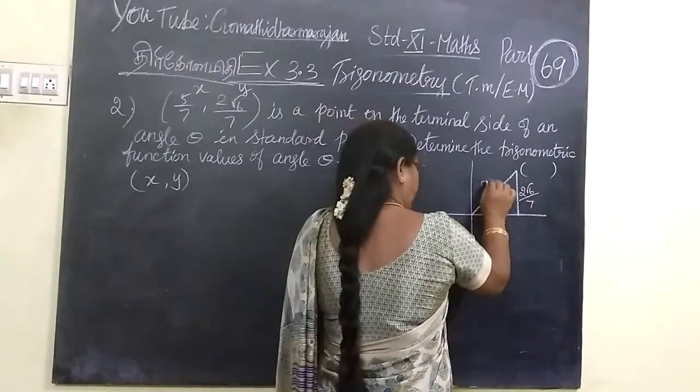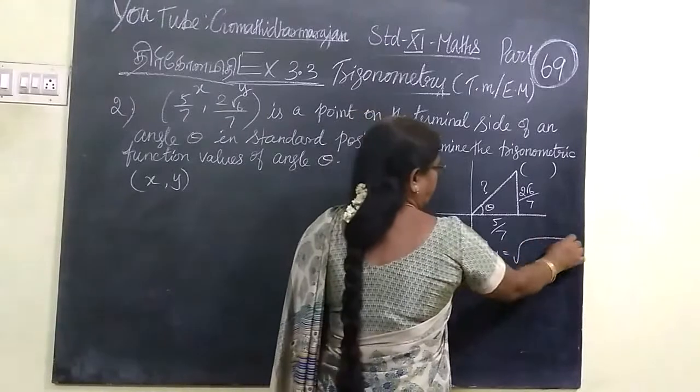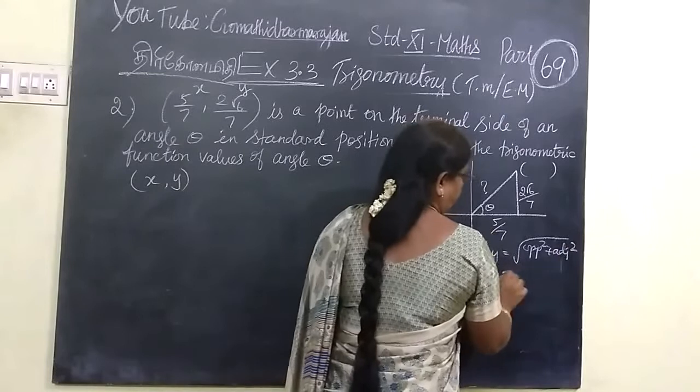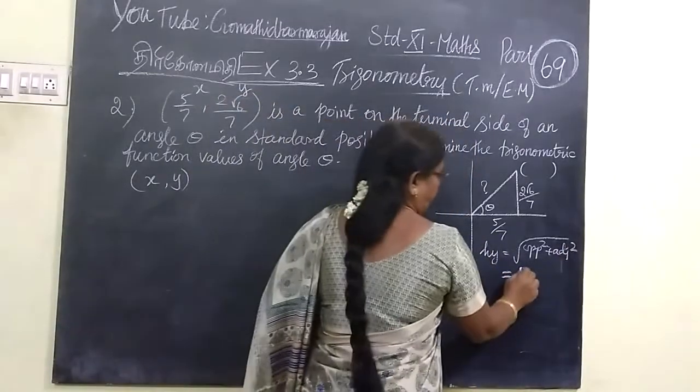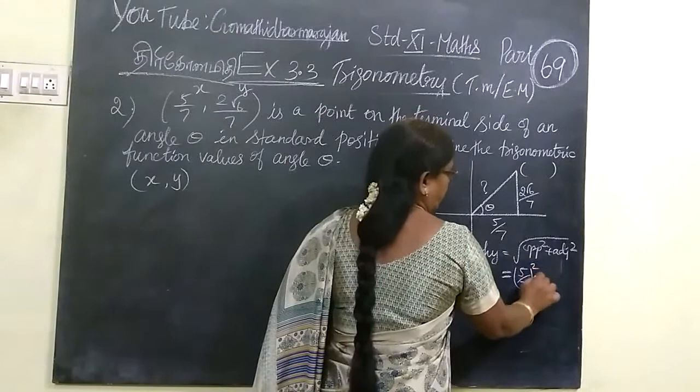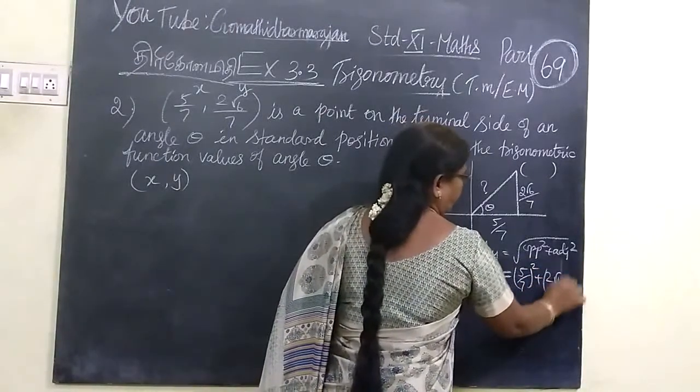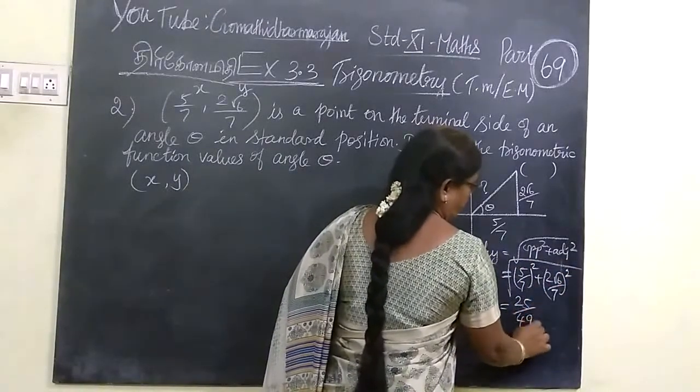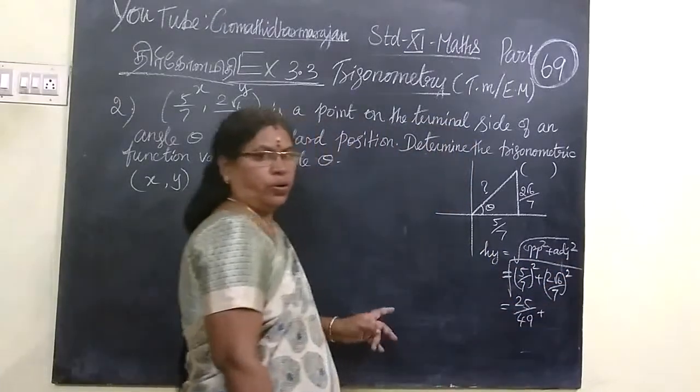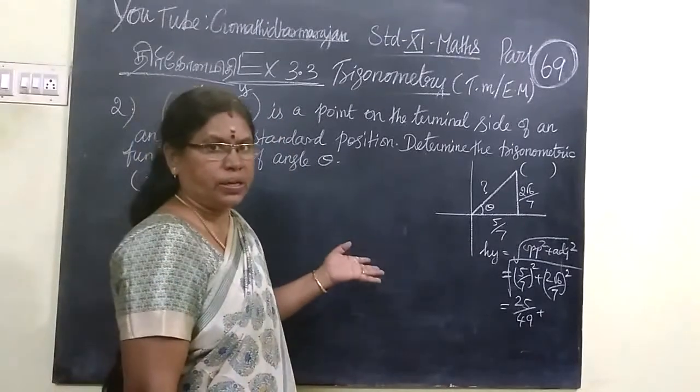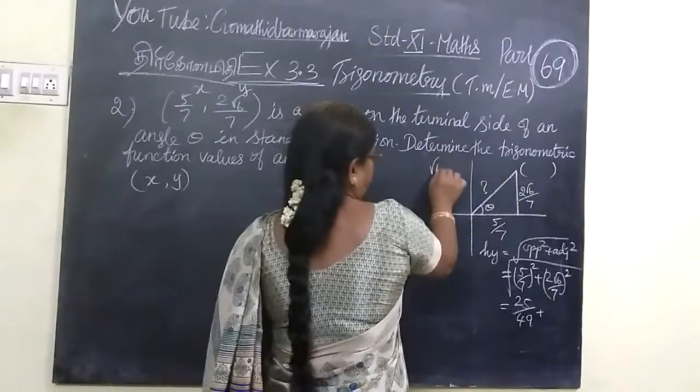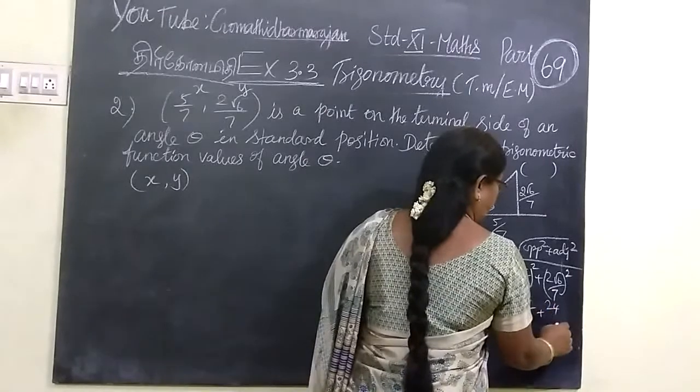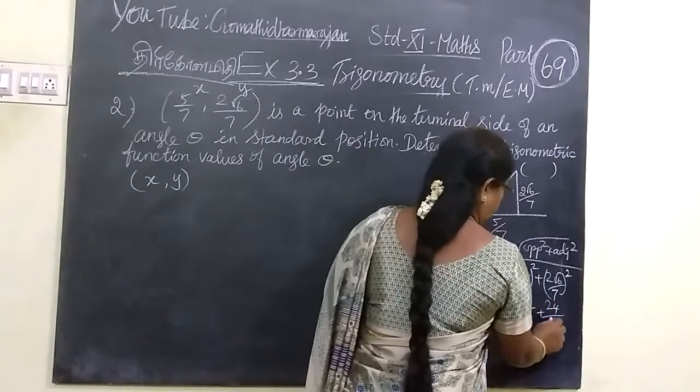You want to find the hypotenuse. So, hypotenuse equals to root of opposite side square plus adjacent side square. So, this will be root of 5 by 7 whole square plus 2 root 6 by 7 whole square. So, this one is 25 by 49. 2 square is 4. Then root 6 square is 6 itself.